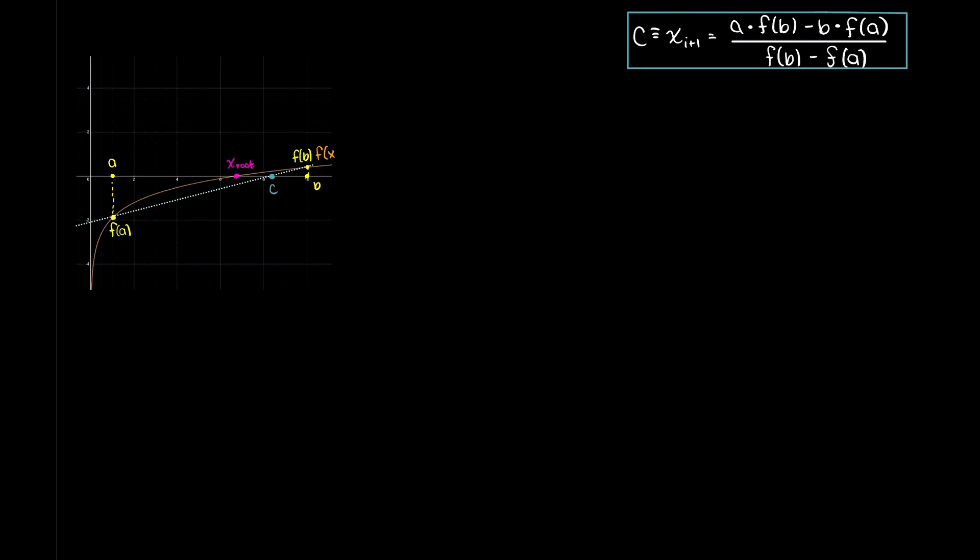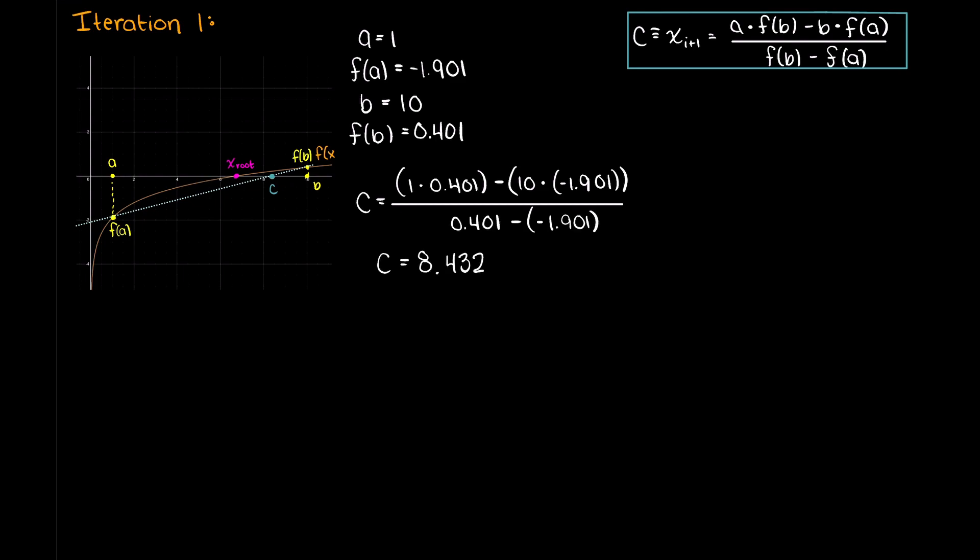So, let's get into iteration 1, which is this diagram here. And, as I stated, we solve for c, which works out to 8.43. Now, plugging 8.43 into our function, we get an output of 0.231.